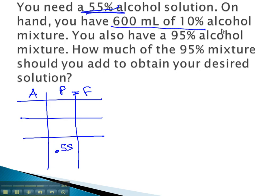On hand, we have 600 milliliters, that's the amount, of 10%. As a decimal, that's 0.1. We also have 95%, 0.95. And we want to know how much of that 95% we need to add. That's our variable. The total amount, then, we get by adding the 600 plus x, and we can calculate our finals by multiplying.